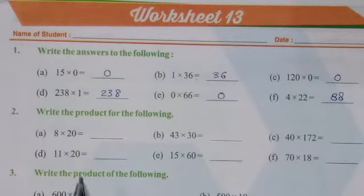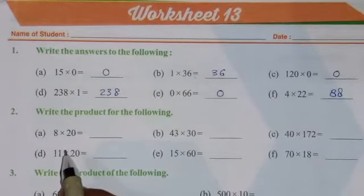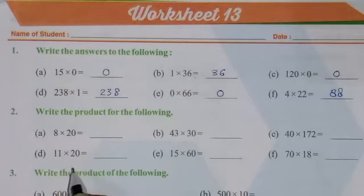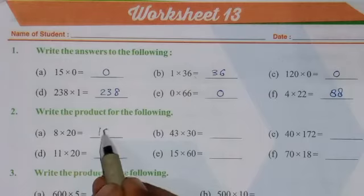See the next question number second. And this time a very interesting property we are going to use to multiply these numbers. Just forget this 0. 8 multiplied by 2 - 8 times 2 is 16, and you have to write this 0 again.